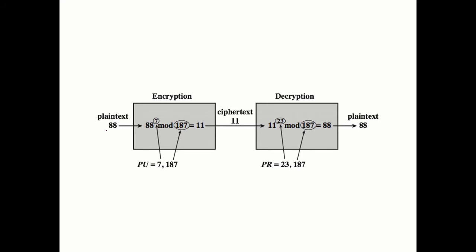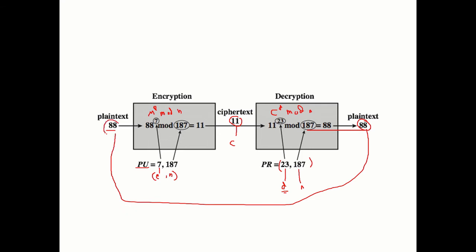This diagram shows plaintext = 88. The public key is E and n. Encryption uses C = M^E mod n, producing the ciphertext. Decryption uses the private key D and n: M = C^D mod n, recovering the original message. It's a simple, effective, and strong public key algorithm.